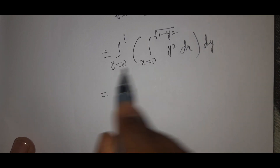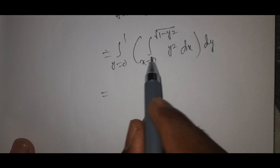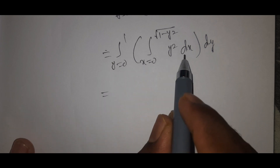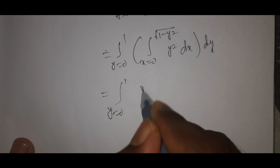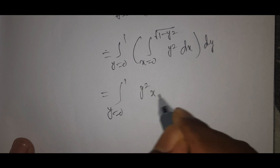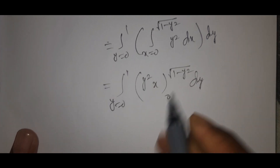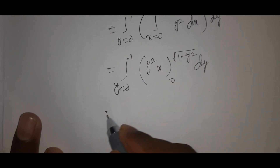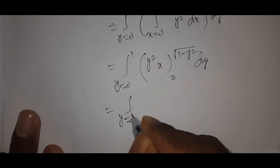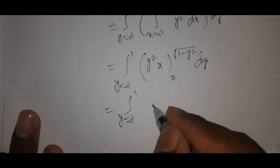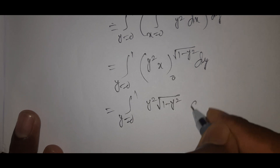Since y squared is constant with respect to x, we integrate directly: integral y equal to 0 to 1, y squared into x evaluated from 0 to root of 1 minus y squared, dy. Applying the x limits gives: integral y equal to 0 to 1, y squared into root of 1 minus y squared, dy.